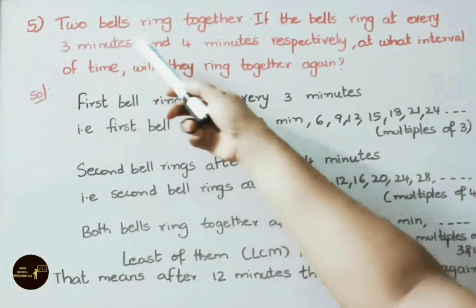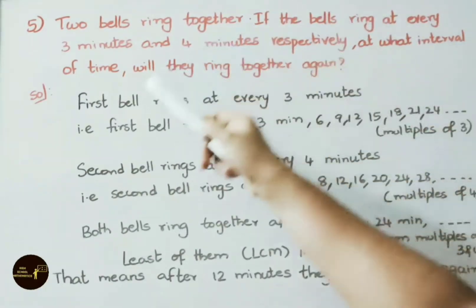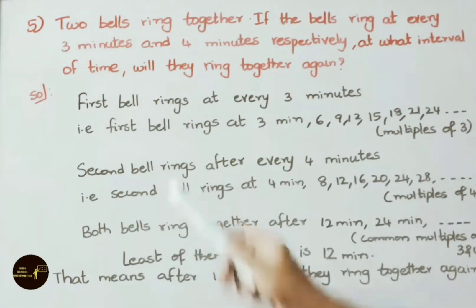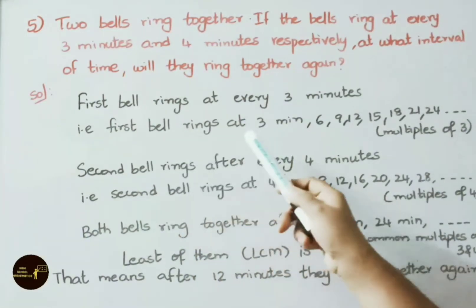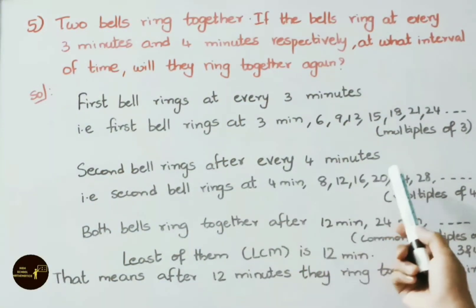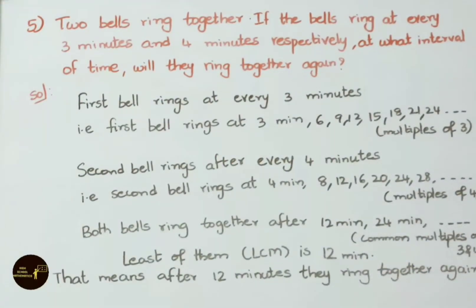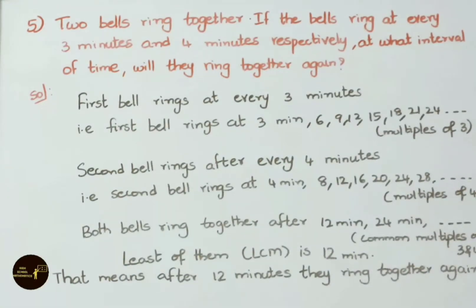Fifth question: two bells ring together. If the bells ring every 3 minutes and 4 minutes respectively, at what interval will they ring together again? First bell rings at 3, 6, 9, 12, 15, 18, 21, 24 minutes and so on — multiples of 3. Second bell rings at 4, 8, 12, 16, 20, 24, 28 minutes — multiples of 4. Both bells ring together after 12 minutes, 24 minutes and so on. LCM is 12 minutes. That means after 12 minutes, both bells ring together again.